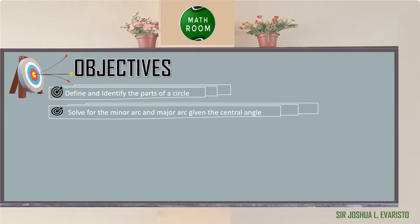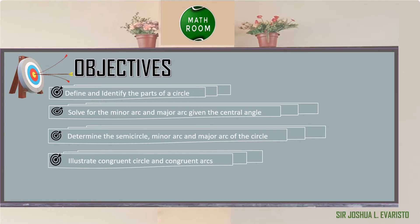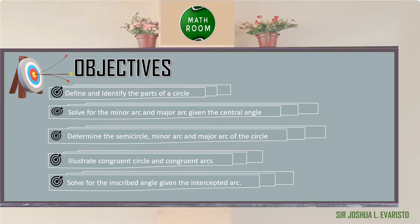You should be able to solve for the minor arc and major arc given the central angle, determine the semicircle, minor arc, and major arc of the circle, illustrate congruent circles and congruent arcs, and solve for the inscribed angle given the intercepted arc.